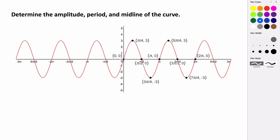So if you take a look at this, we see that it starts at a zero, goes up to a maximum, back to a zero, down to a minimum, back to a zero. How long does it take before the pattern repeats? Well, if we start at our x-intercept here, we can go up to a maximum, then to a zero, then to a minimum, then to a zero, and then back up to a maximum.